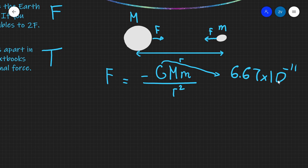The only way to make this force considerably large is to either increase the masses considerably or reduce the distance between the masses considerably. Let's have a look at how this law applies to those three statements.